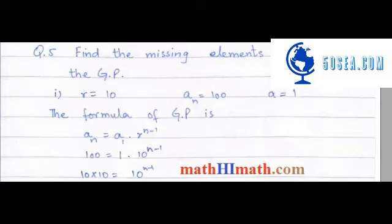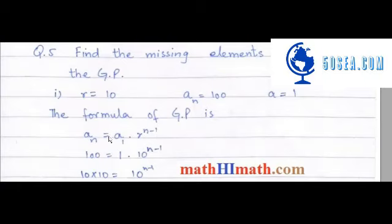Bismillahirrahmanirrahim, I'm Sajid Mahometh from mathemath.com. Let's start with question number 5 of exercise 7.4. The question is to find the missing element of a geometric progression. In this formula you can see there are four values: n, a1, r, and an. Three values will be given and the fourth one has to be found out.